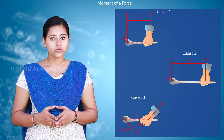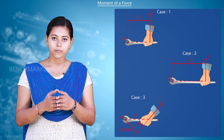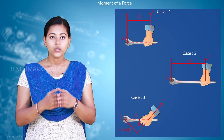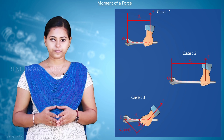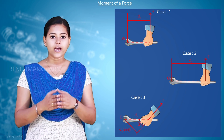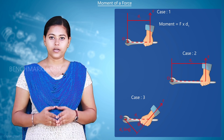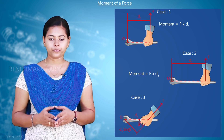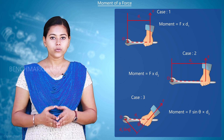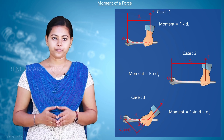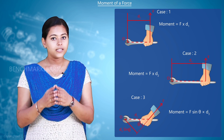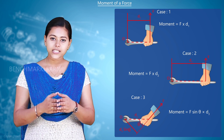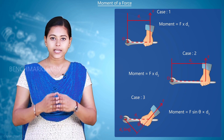Now, if you consider a spanner when it is used to tighten a bolt, the moment created at the point depends on the force and the distance of application of the force. In the first case, moment equals F into d1. In the second case, moment equals F into d2. In the third case, moment equals F sine theta into d3. In the second case, the distance is maximum and the force is acting perpendicular to the spanner, therefore maximum moment will be created at the center.